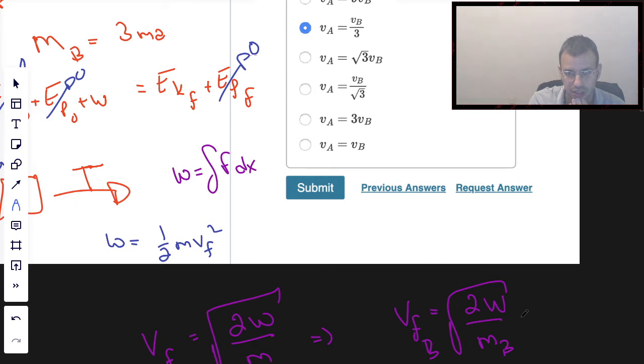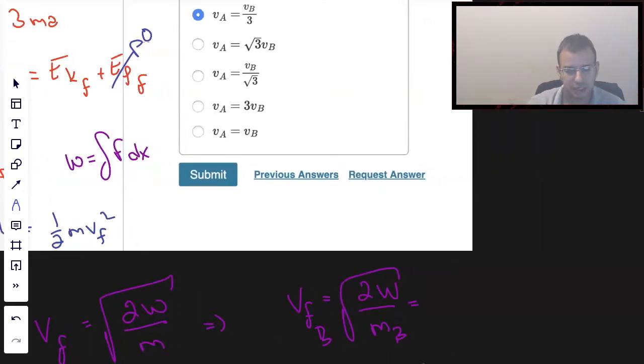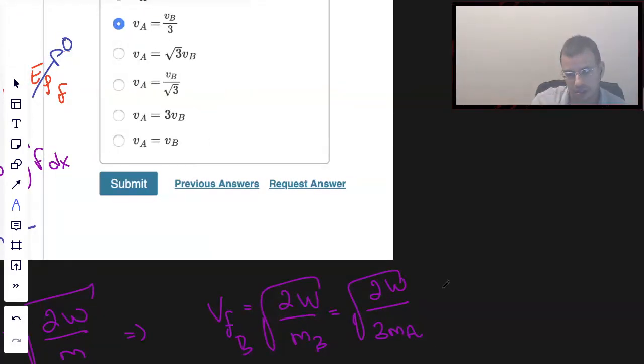So that's going to equal W over 3 mass A, square rooted. To factor out the 3 on the bottom, it's going to be 1 over square root of 3 times the square root of 2W over mass A.